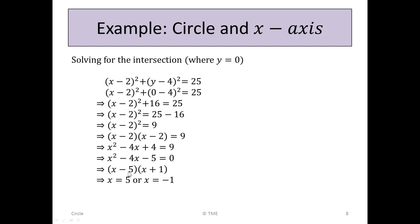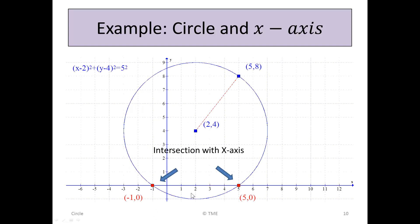So in effect, we've got two factors: (x - 5) or (x + 1) equal to 0. So x is 5 or x is -1. Since we know y is 0, we're talking about the points (5, 0) or (-1, 0). So (5, 0) and (-1, 0) were the actual points of the intersection with the x-axis of this circle.